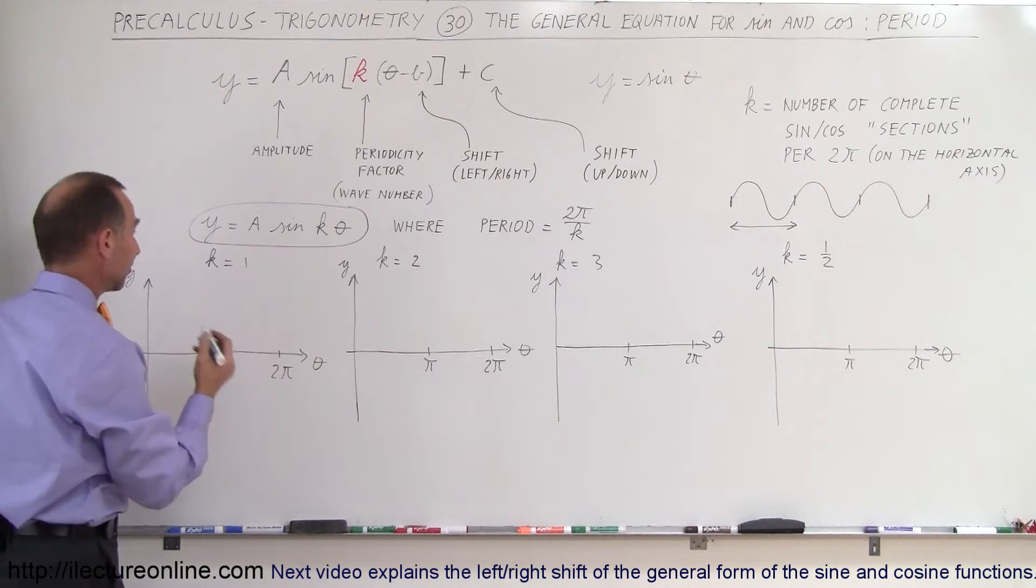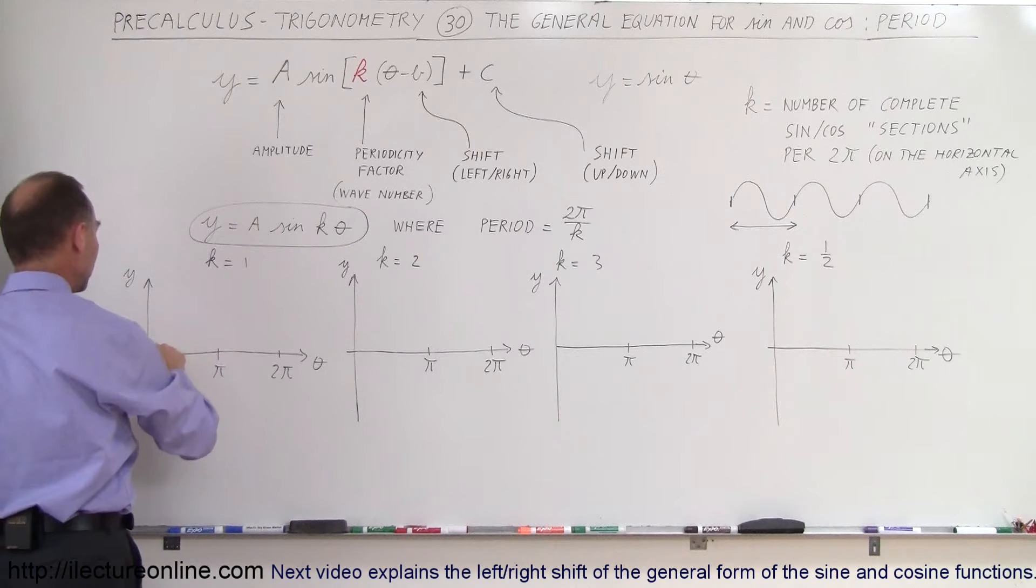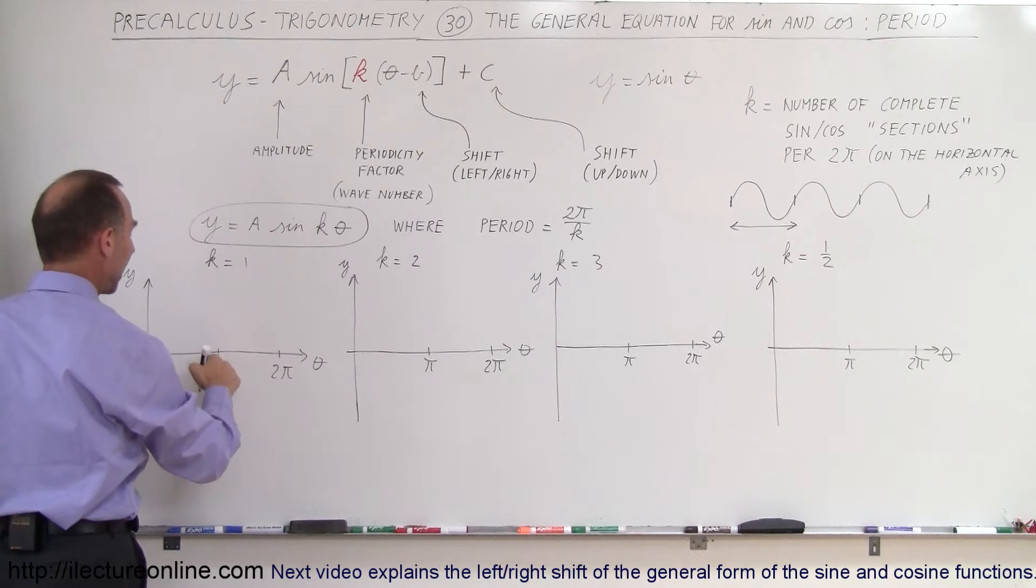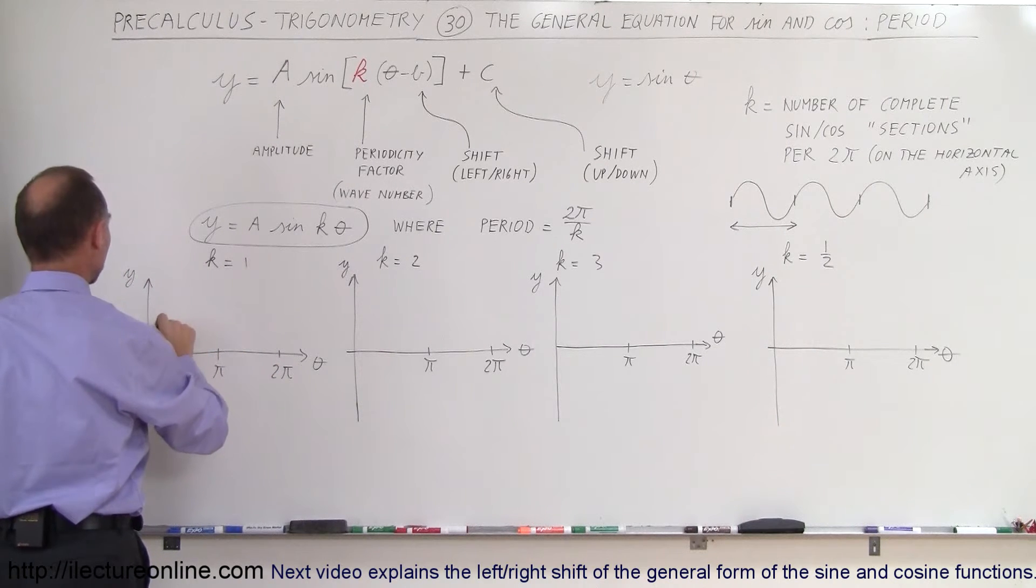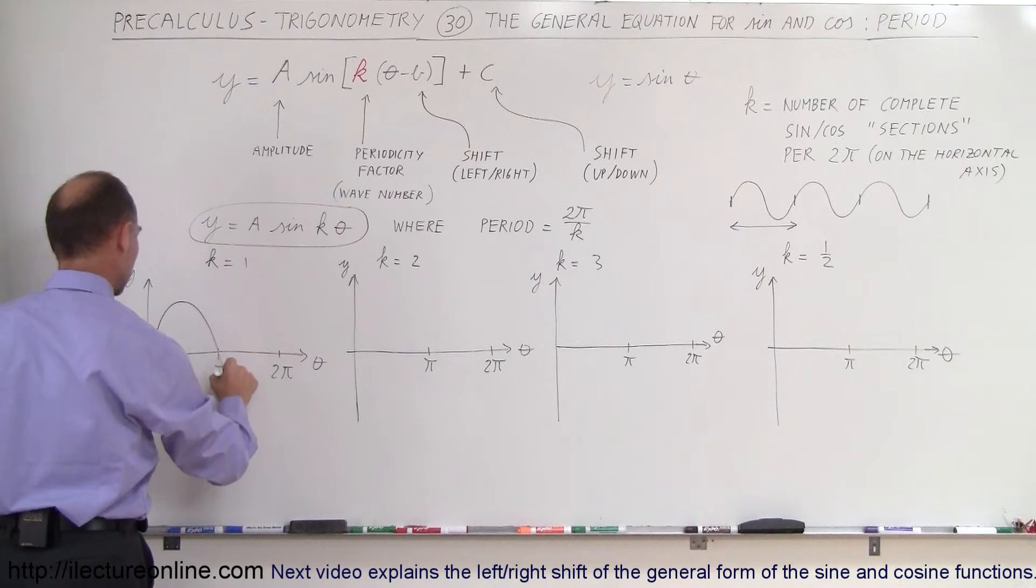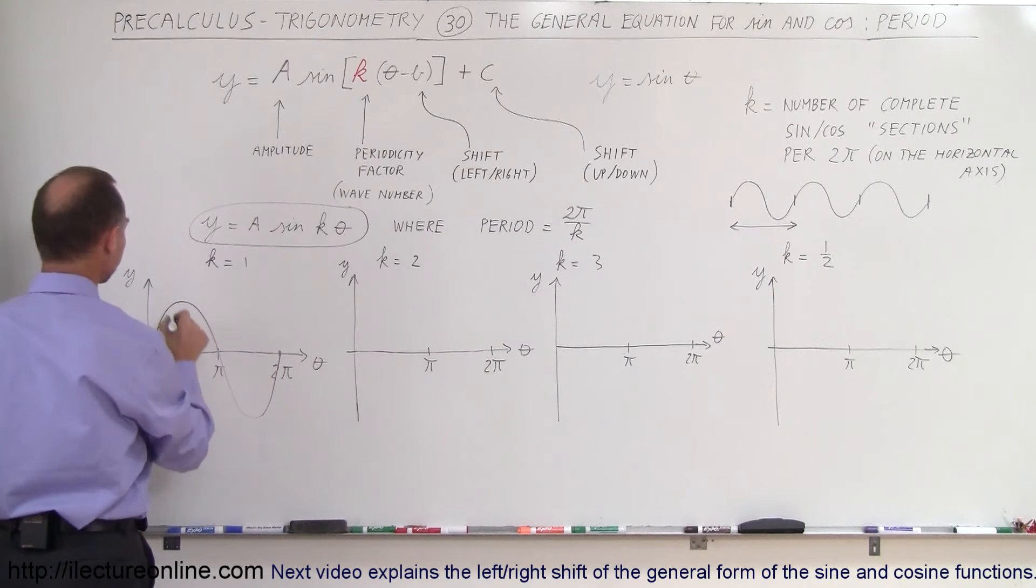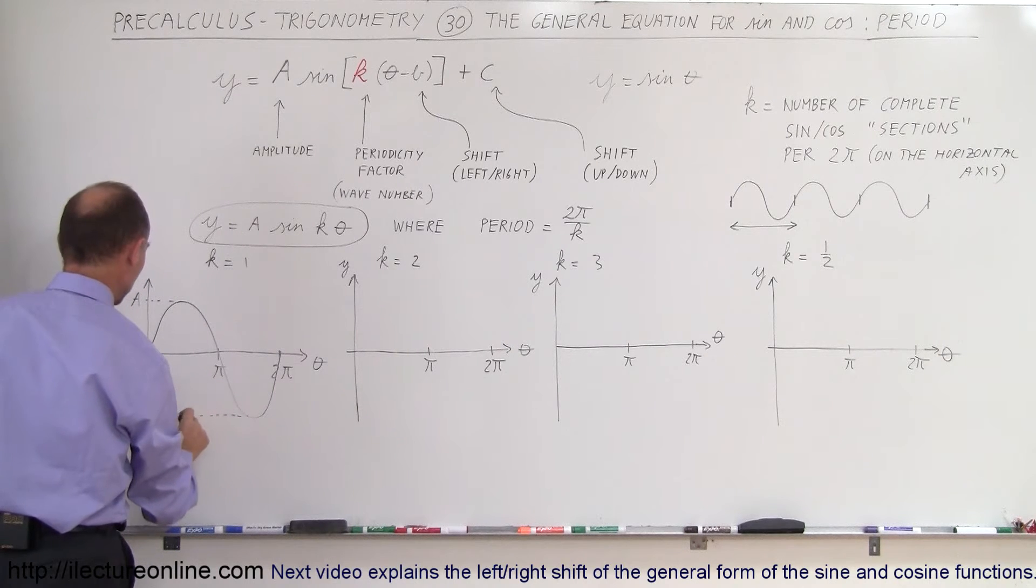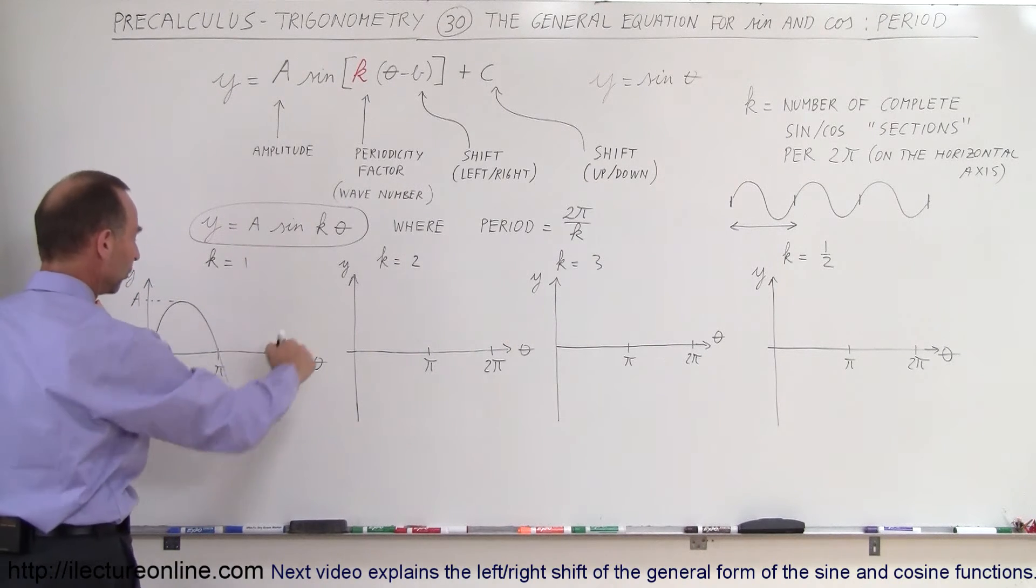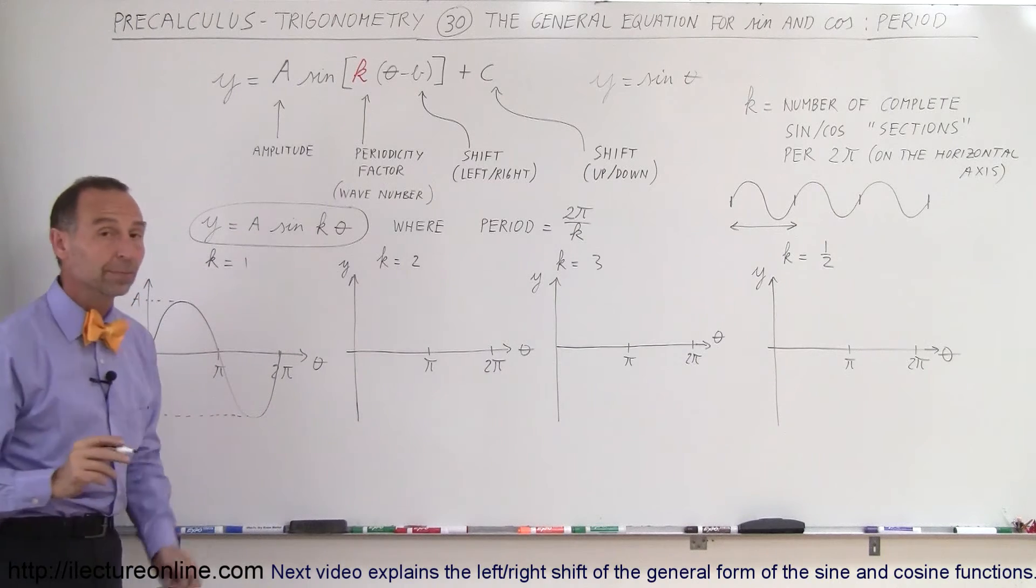So we know that the sine function normally starts at 0, reaches a maximum, goes to 0 at π, reaches a minimum, and goes to 0 at 2π. So the normal function would look like this. We have the maximum amplitude A, the minimum amplitude would therefore be minus A, and that's what a normal function would look like when k is equal to 1.